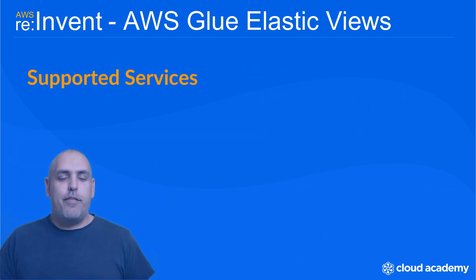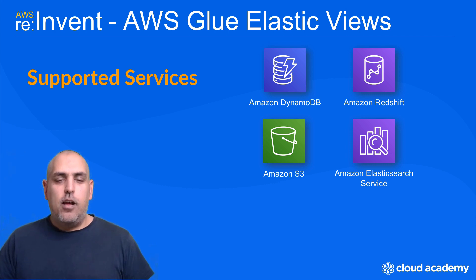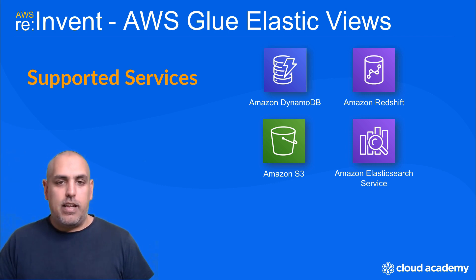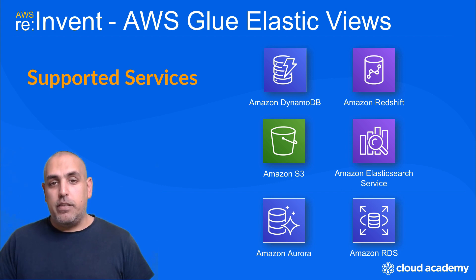At the time of the announcement, AWS Glue Elastic Views supports the following services: Amazon DynamoDB, Amazon Redshift, Amazon S3, and Amazon Elasticsearch. Over the coming weeks and months this list will certainly be extended across many more services such as Amazon RDS and Amazon Aurora, so always check the latest AWS documentation for the most recently supported list of services.